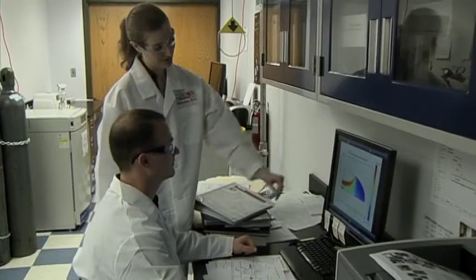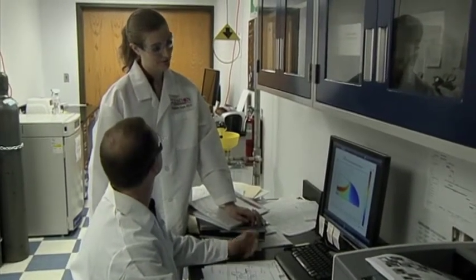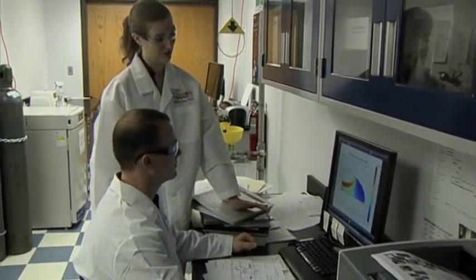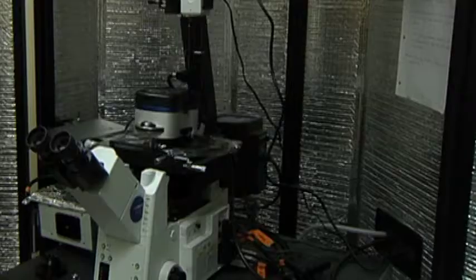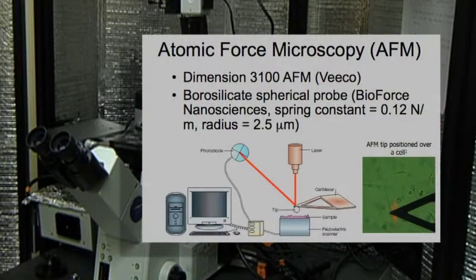So to look at mechanics of biological things at a very small scale, you have to use some fancy equipment. The main technique we use is atomic force microscopy or AFM.